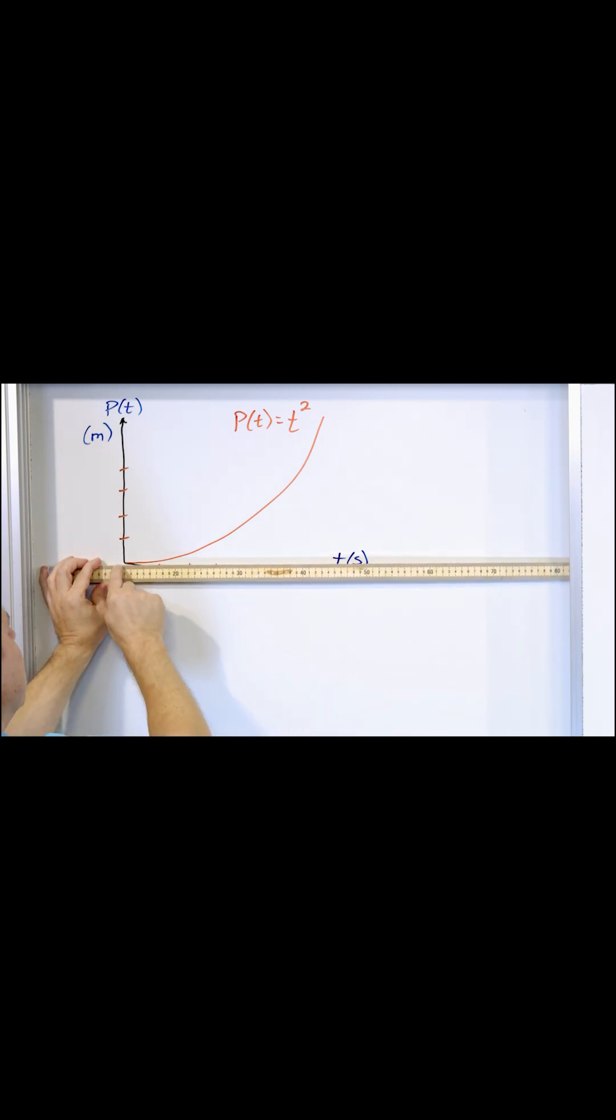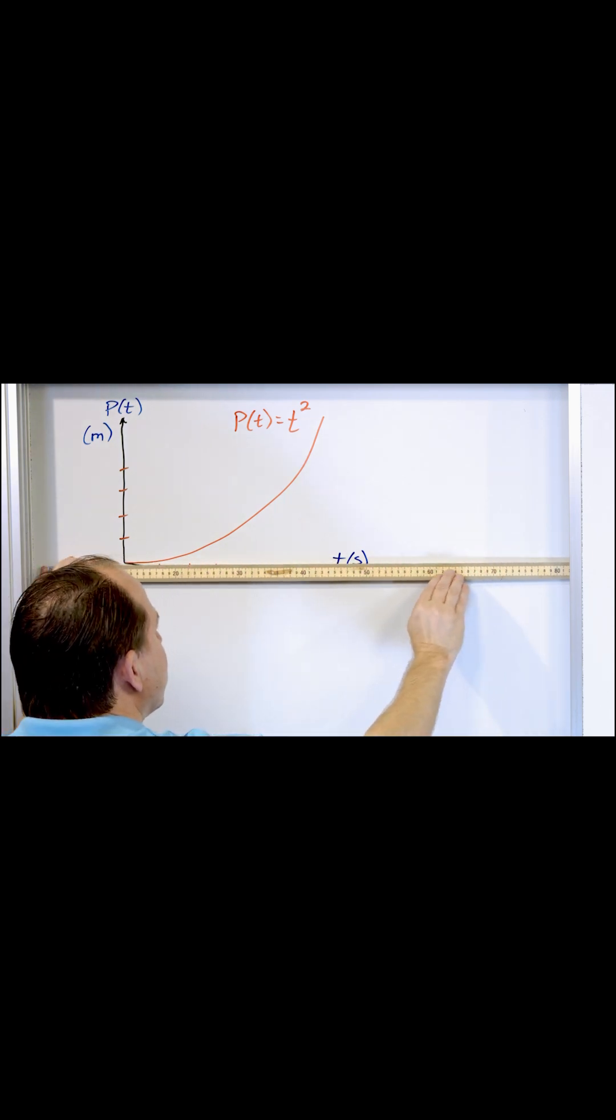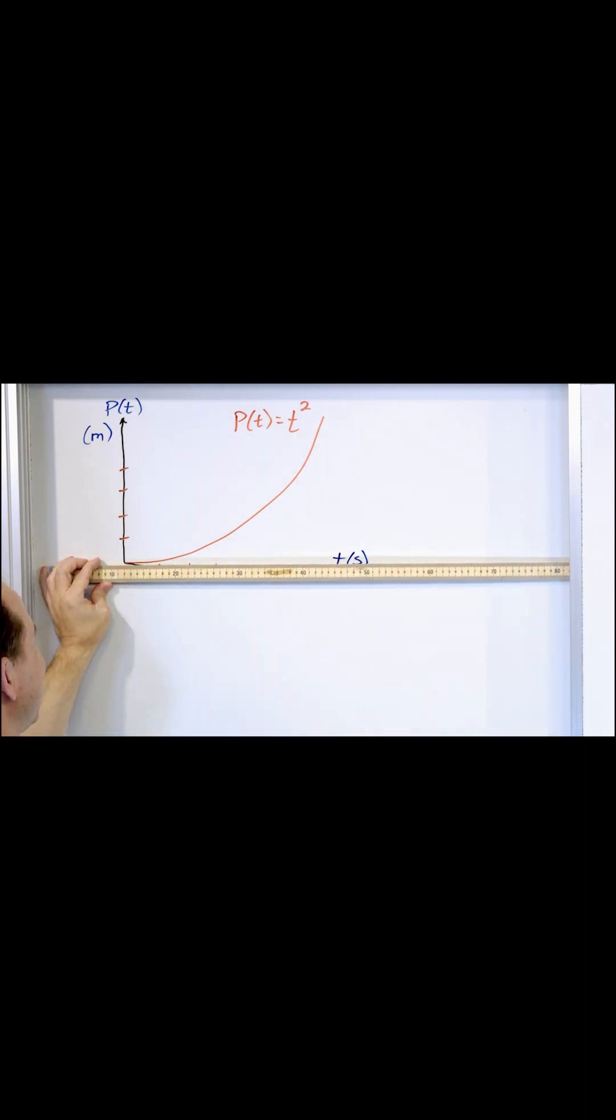I draw a line tangent to the curve down here, and you can see that this ruler is almost exactly flat, so the derivative, the rate of change, is very close to zero or exactly equal to zero down here.